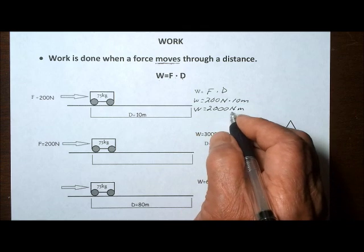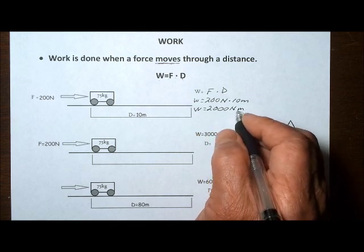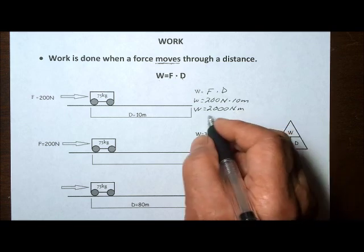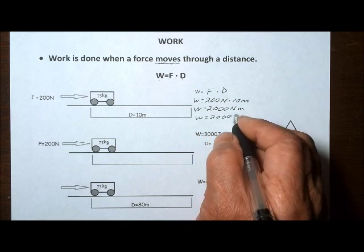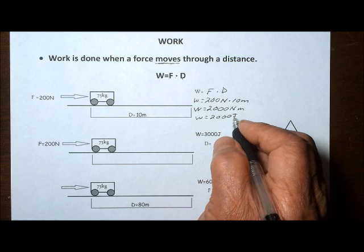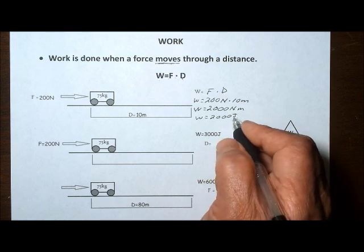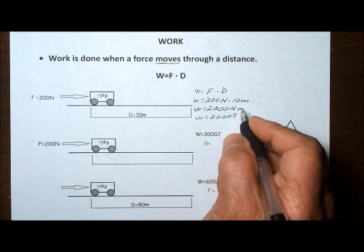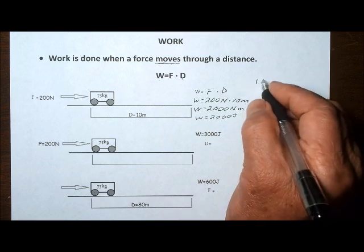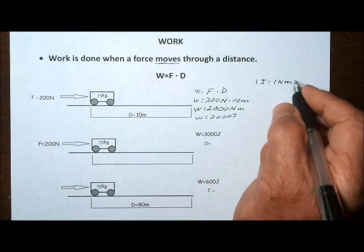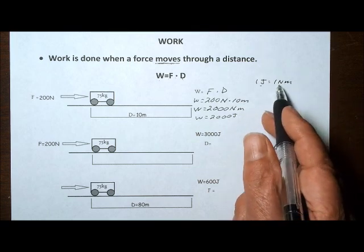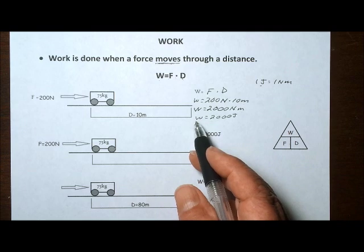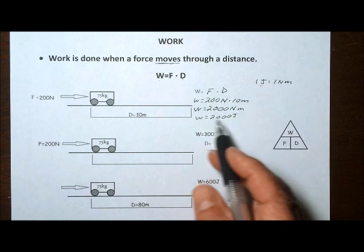The basic unit for calculating work is a newton meter, which can be expressed as a joule. The joule, spelled J-O-U-L-E, is a unit of work. It's also a unit of energy, and that joule is equal to one newton meter. So whenever you hear the term joule, you know that we're also talking about a newton meter, which is a force times a distance. The work done in the first problem is 2,000 newton meters, or 2,000 joules.